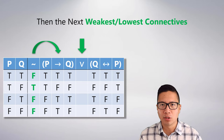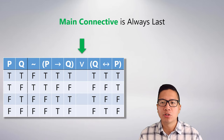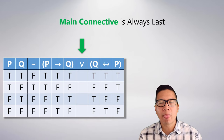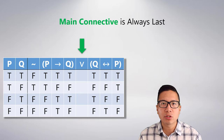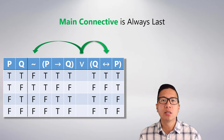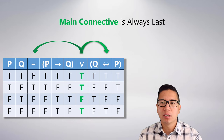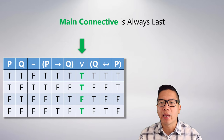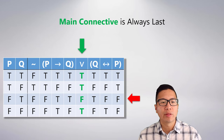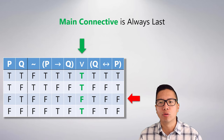Once everything else is filled out, the main connective column is last. The main connective of the left disjunct is the negation and the main connective of the right disjunct is the biconditional — those are the two columns to combine. A disjunction is false in only one case: when both sides are false. Looking at those two columns, both are false in just the third TVA, when P is false and Q is true. So this statement is false under that TVA and true in every other case.